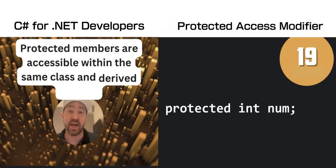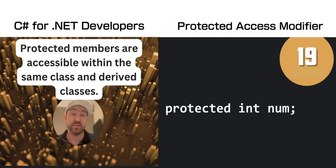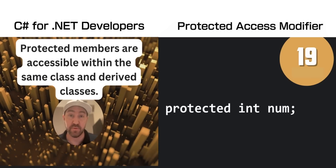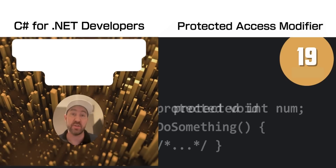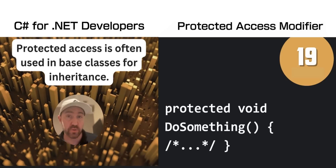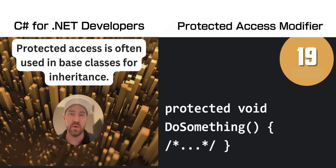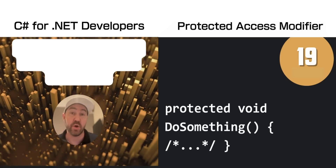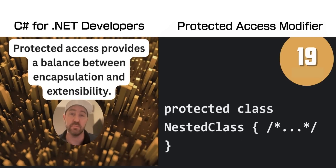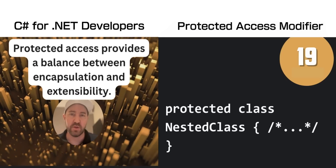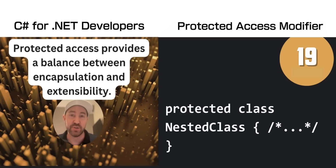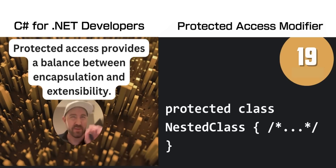The protected access modifier in C# is similar to the private access modifier, except that you can also access the member in derived or child classes. It is very commonly used in inheritance situations. You tend to use it when you want to keep classes closed for modification, but want them a little bit extensible.